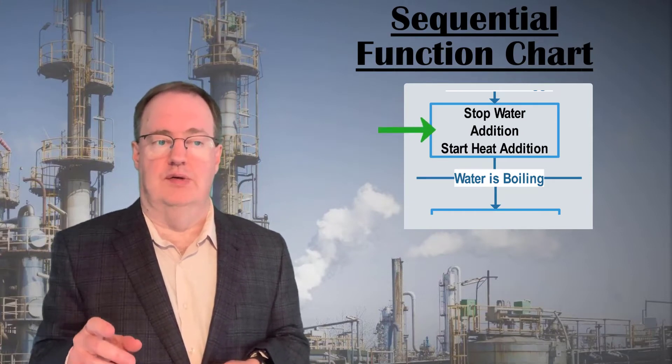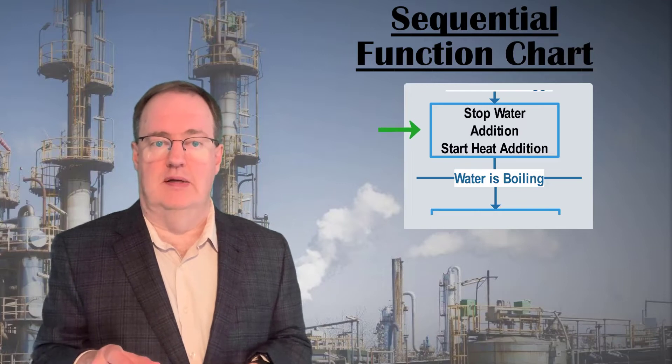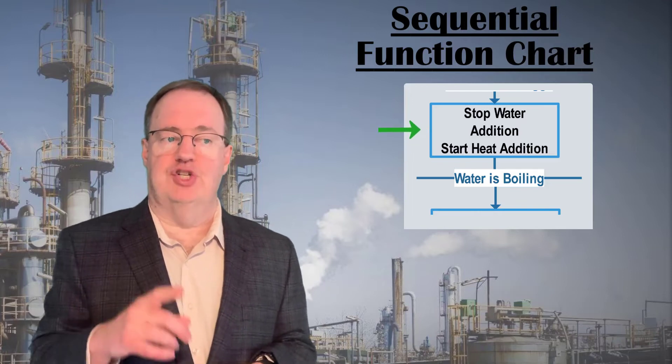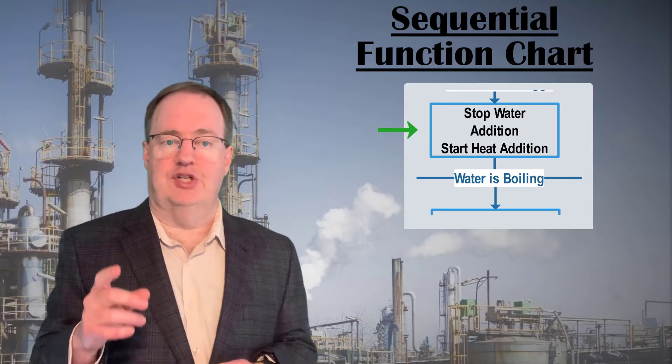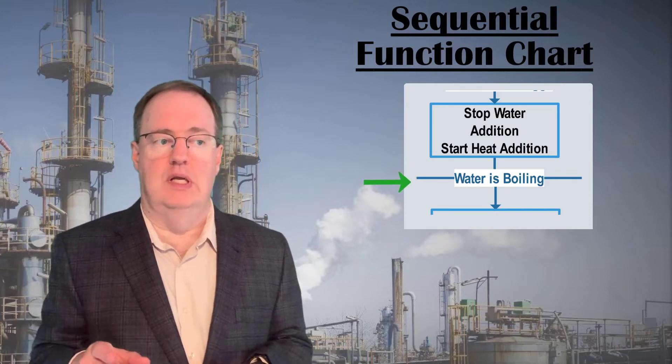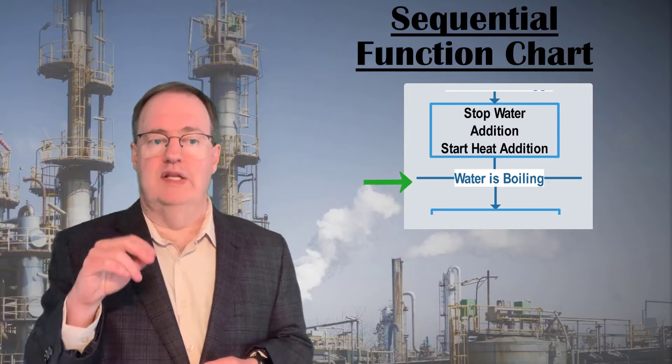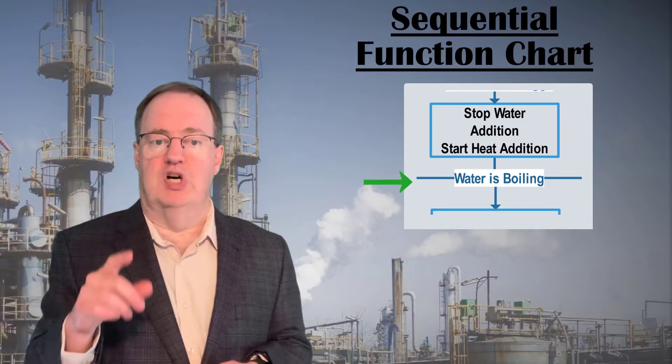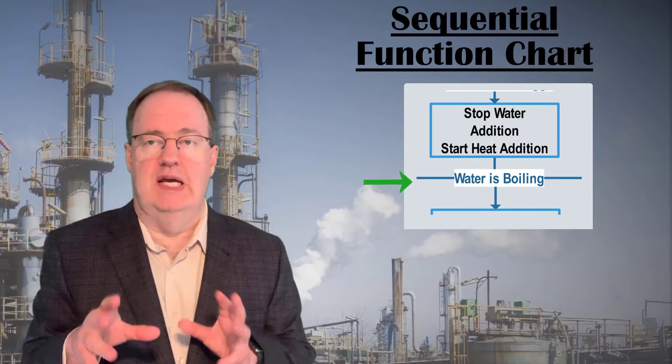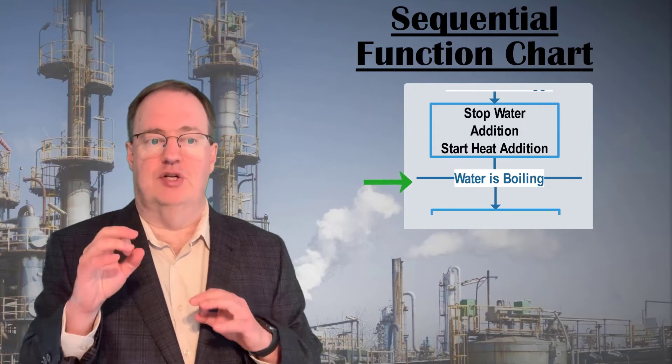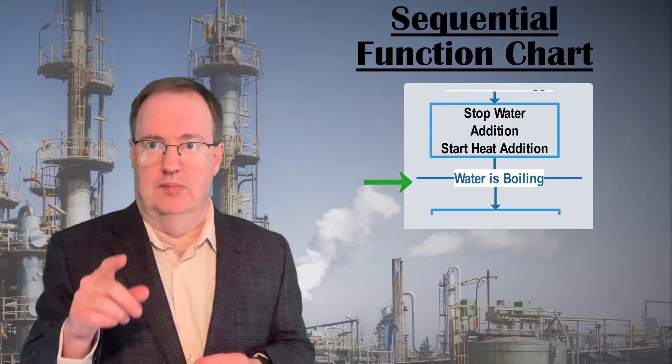Actions will go into rectangles. Everything in one rectangle is executed simultaneously. We'll connect the action rectangles with lines and arrows, and after every action block, there must be a transition, indicated by a horizontal line, where we'll write the logical expression, which must be true to proceed. So, we continue to execute the actions in the action block until the transition that follows it becomes true.